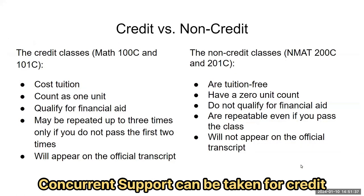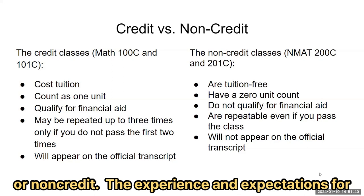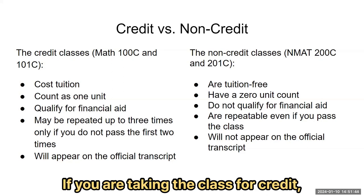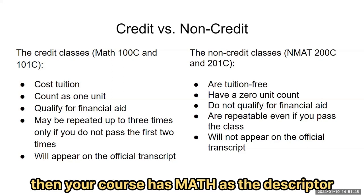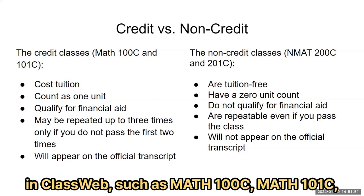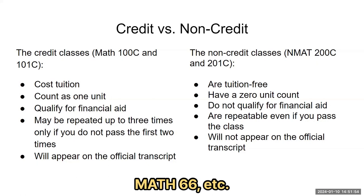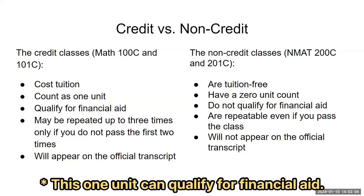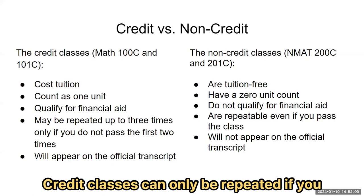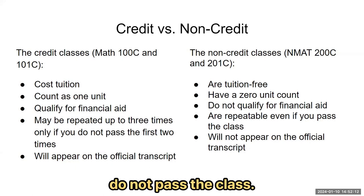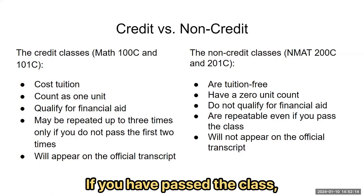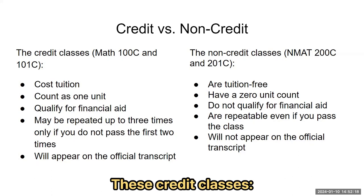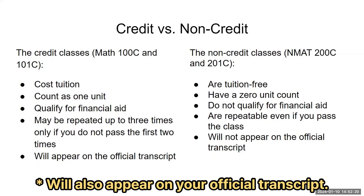Concurrent support can be taken for credit or non-credit; the experience and expectations are the same. If you are taking the class for credit, your course has MATH as a descriptor in Class Web, such as Math 100C, Math 101C, Math 66, etc. Credit math classes cost tuition and count as one unit, which can qualify for financial aid. Credit classes can only be repeated if you do not pass; if you have passed, they cannot be repeated. These credit classes will also appear on your official transcript.